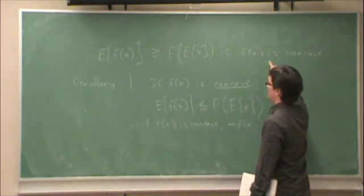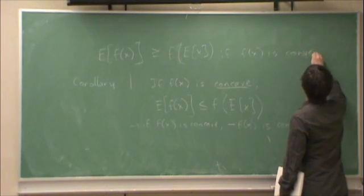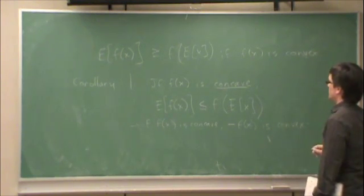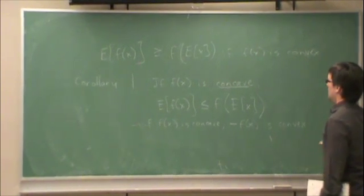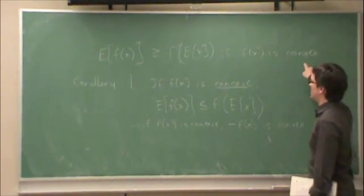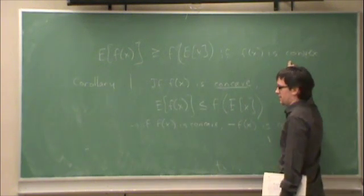The bottom is convex. If f of x is, sorry, convex. Sorry, I always get those two mixed up. I'm not sure why. That's why I need the cave rule. This is the statement of the theorem. This is Jensen's inequality.